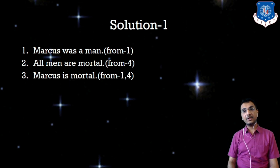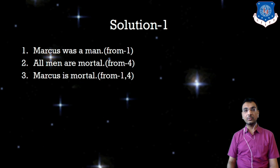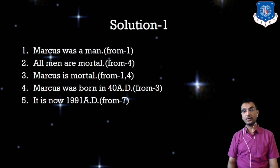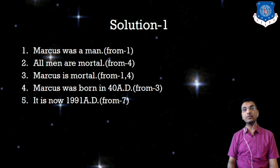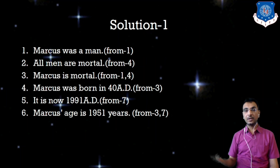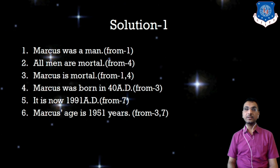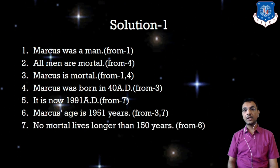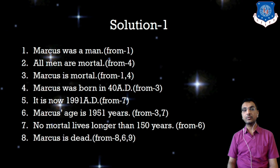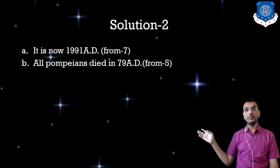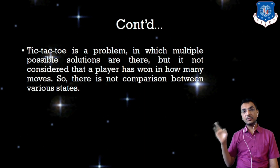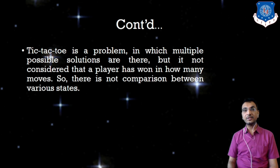Formalizing the solution: Marcus was a man (axiom 1), all men are mortal (axiom 4), so Marcus is mortal (from 1 and 4). Marcus born in 40 AD (axiom 3), it is now 1991 AD, so Marcus's age would be 1951 years (from 3 and 7). No mortal lives longer than 150 years (axiom 6), so Marcus is also dead. From axioms 6 and 9 we can conclude this.